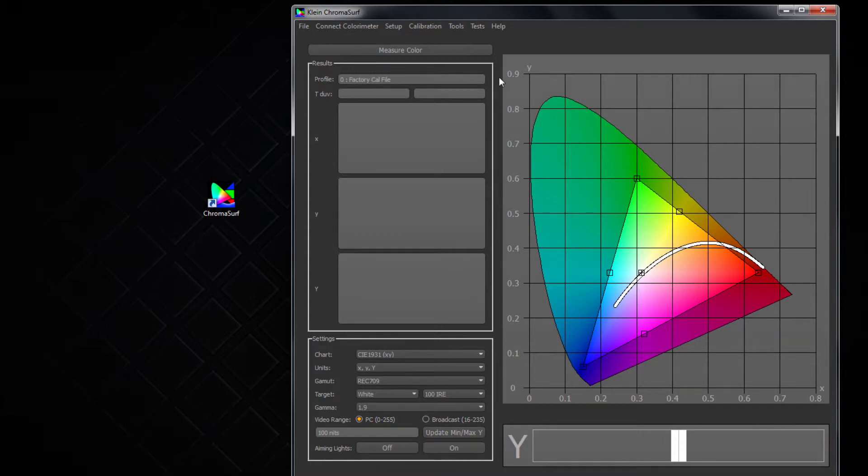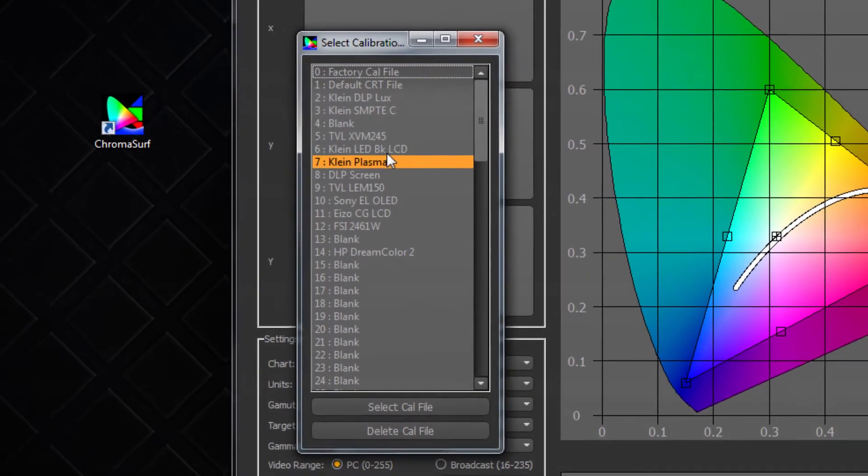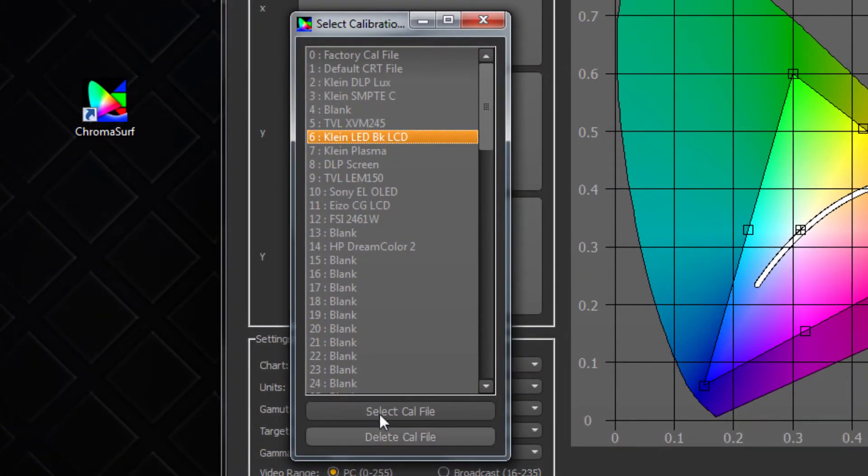Here is where it gets a bit confusing. The profile that you load to calibrate from will depend on the display you have. Today I am calibrating a Samsung LED backlit monitor. I will just double click the profile box and choose the backlit LED option from the list. If you were calibrating a Sony OLED, you would choose that profile and so on.